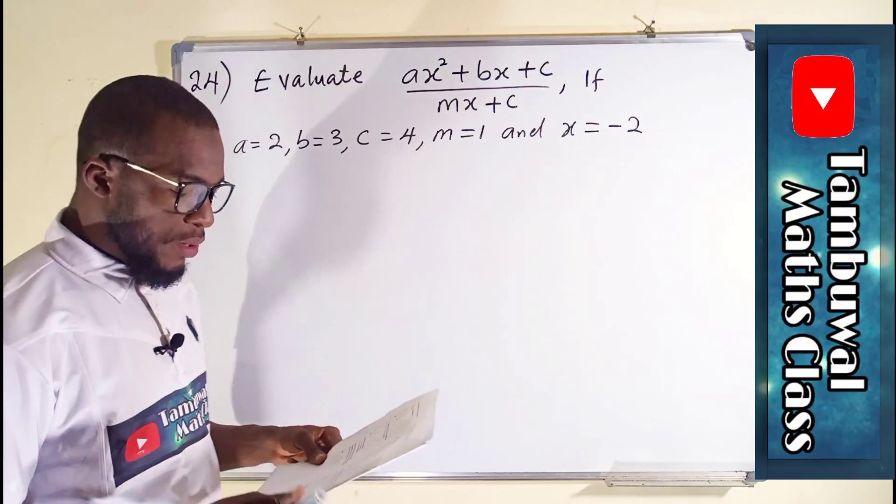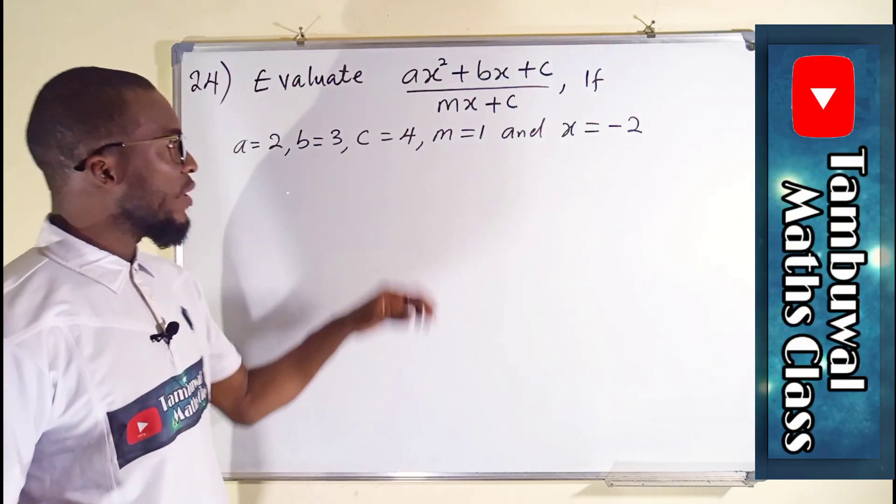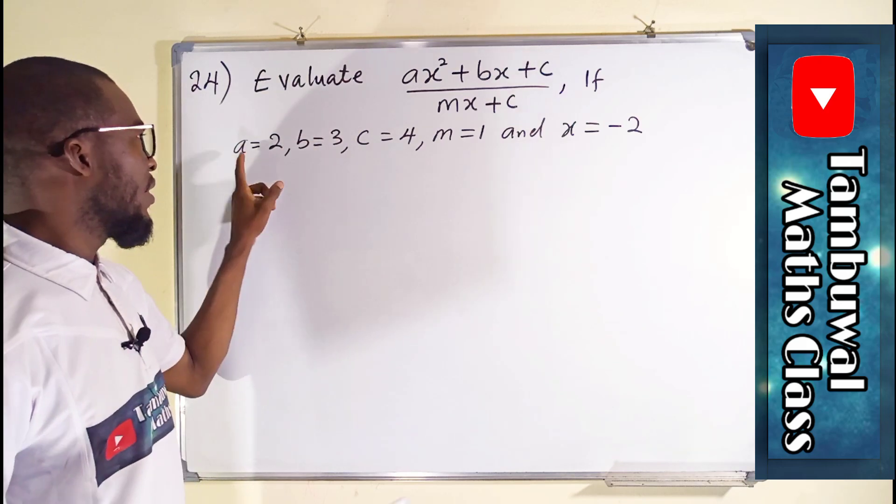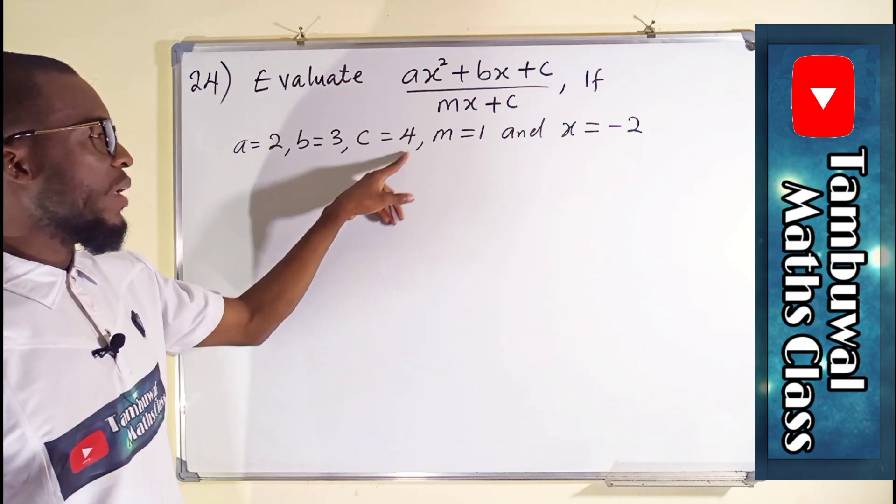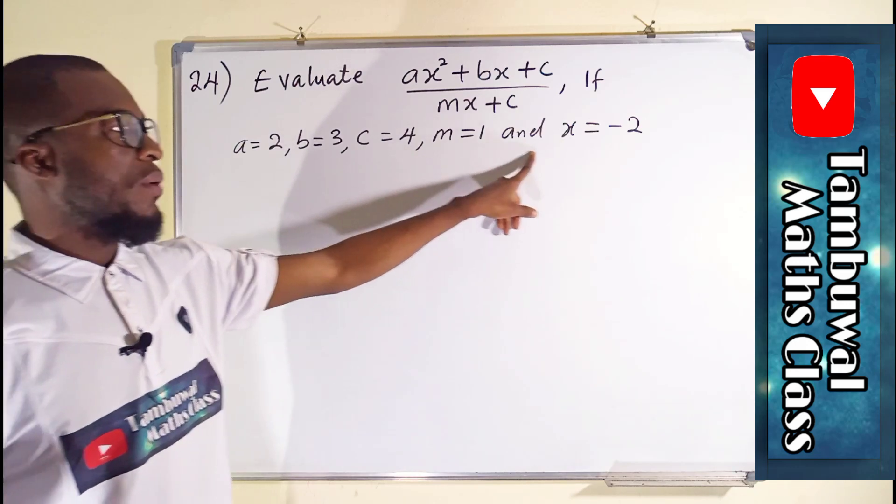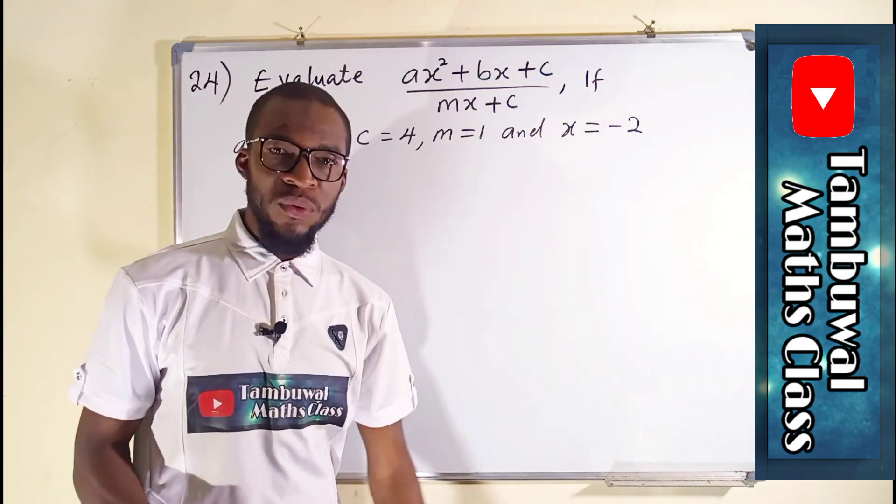Question number 24 says we should evaluate this expression given that a is equal to 2, b equal to 3, c equal to 4, m equals 1, and finally x equal to negative 2.